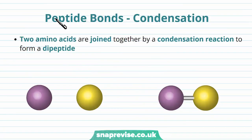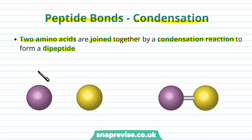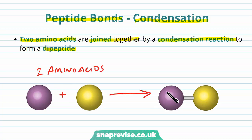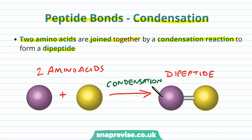Let's talk about how peptide bonds are formed in condensation. Two amino acids get joined together in a condensation reaction to form a dipeptide. So we take two amino acid monomers, add them together, and in a condensation reaction we form a dipeptide — condensation meaning we're adding things together to make longer chains.